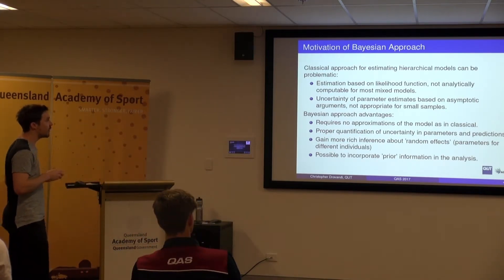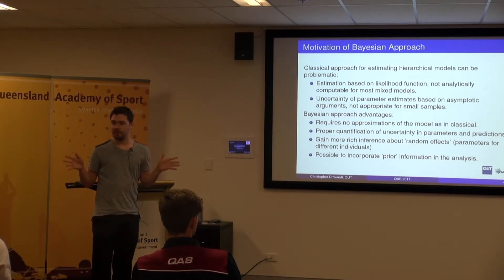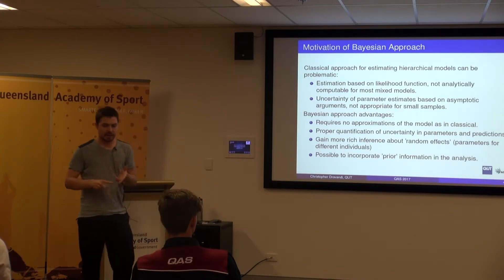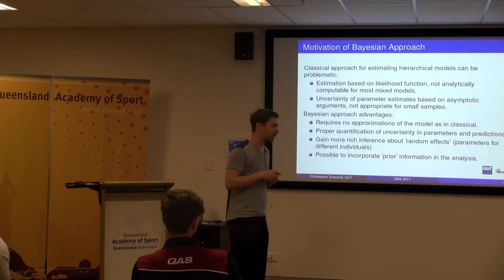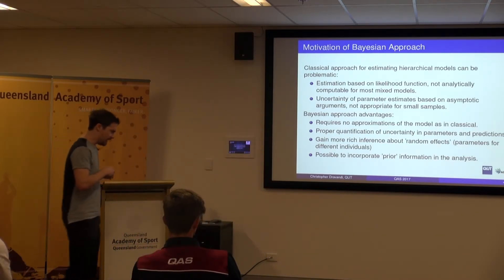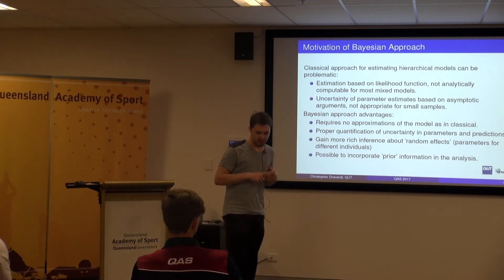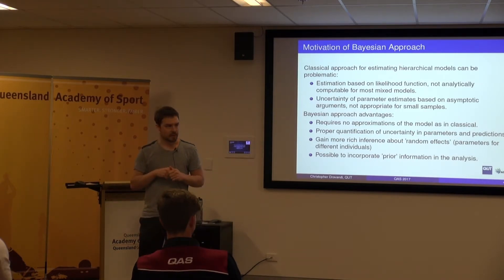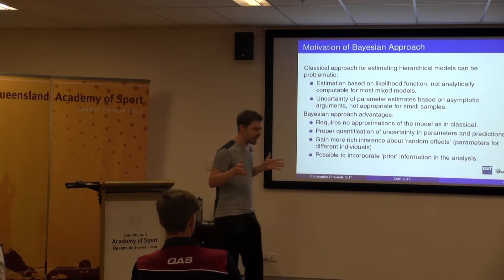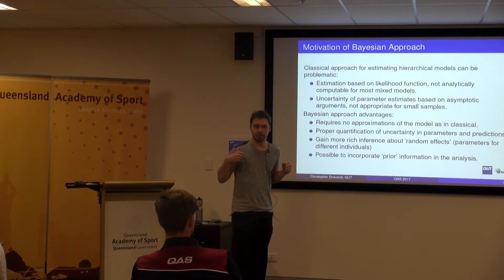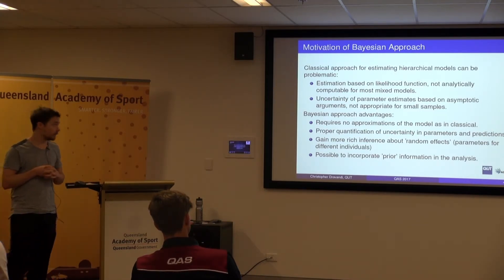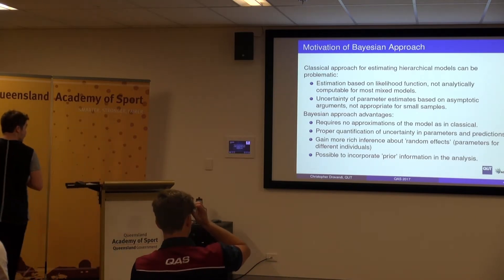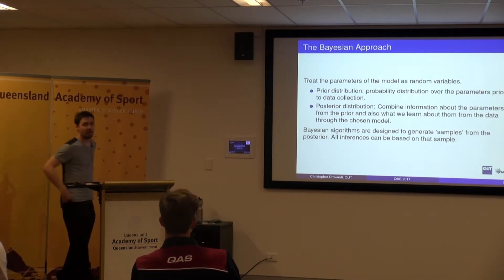Another approach called the Bayesian approach helps us overcome some of these limitations. Some of the advantages of the Bayesian approach: we don't need to do any approximations to our mixed effect model. There are no asymptotic arguments, so all of your inferences are only conditional on the data that you saw — you get a proper quantification of the uncertainty in your parameters. Also, in the classical framework when we fit these random effects models we typically only get estimates about the population parameters. But we may also be interested in learning about particular individuals in your data set. The Bayesian framework gives you inferences not only about the population parameters but also about all of the random effects in your model. And the final advantage is that with the Bayesian analysis we can potentially incorporate prior information into the analysis.